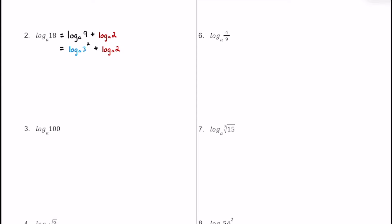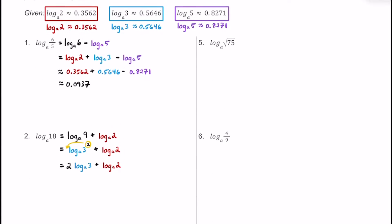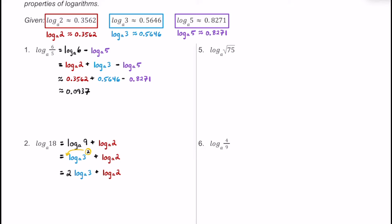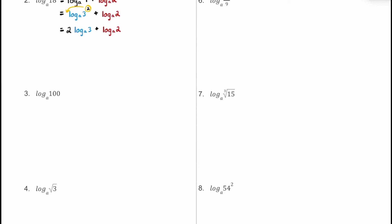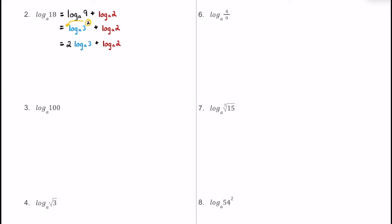Now we have two logs we can deal with. Using the power rule, we bring the 2 in front of the logarithm, giving us 2 times log base a of 3 plus log base a of 2. Substituting in the decimal approximations, we're going to get about 1.4854.